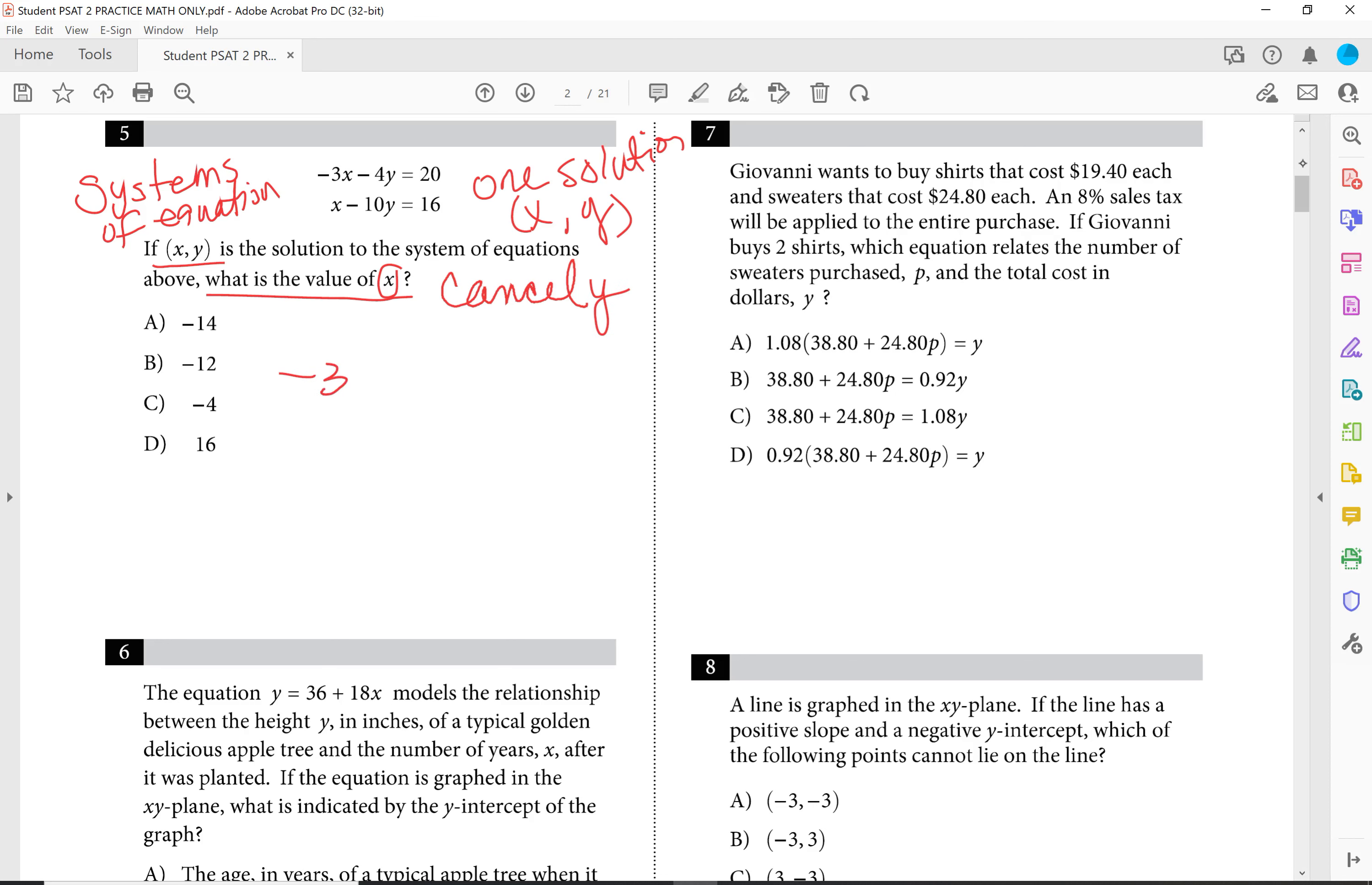So if I cancel y, I'm going to start with the equations. I have negative 3x minus 4y equal to 20. And I have x minus 10y equal to 16. They want to know the value of x. So I'm not going to cancel x. I'm going to cancel y. I'm looking at the y's. I've got a 4 and I've got a 10. A common value that would work would be 20 in total. So if I multiply this line by 5, remember you're going to distribute this all the way across to all three terms. And if I multiply this line by negative 2, again, I'm going to distribute that to all three terms. Well, I end up with negative 15x minus 20y equals 100. This gives me negative 2x plus 20y equals negative 32.